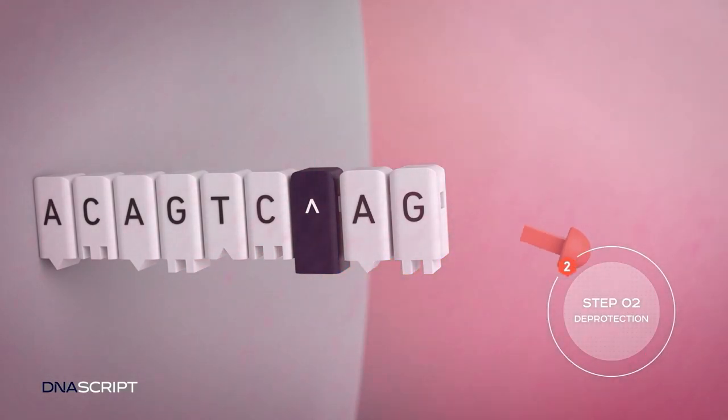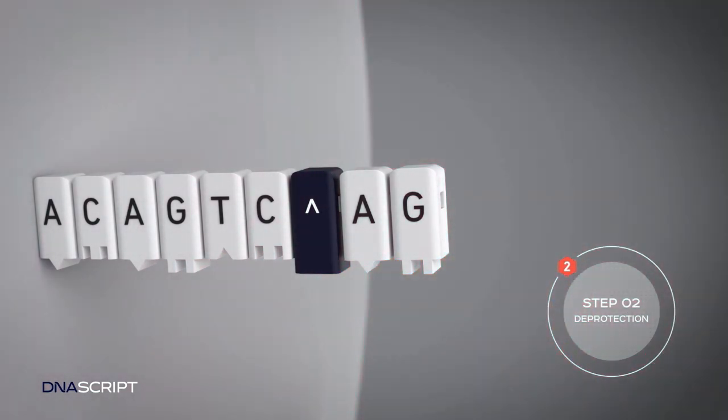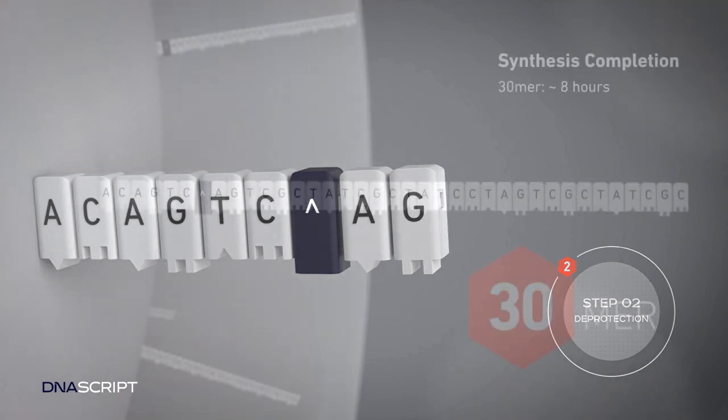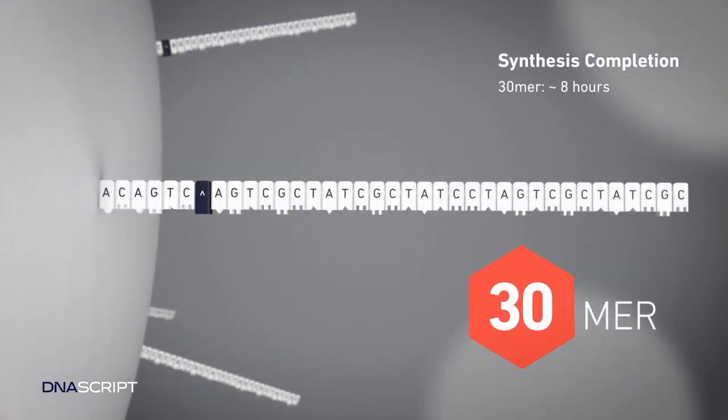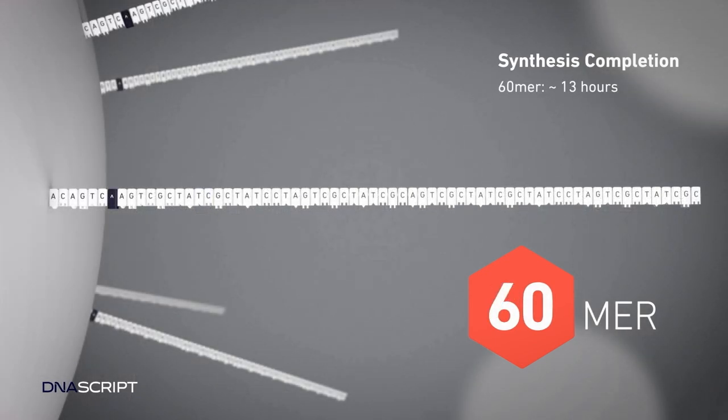An acidic reagent is then added to reverse the nucleotide terminator, and the oligo is ready for the next nucleotide addition. This cycle repeats until the oligo sequence is synthesized to the desired length.